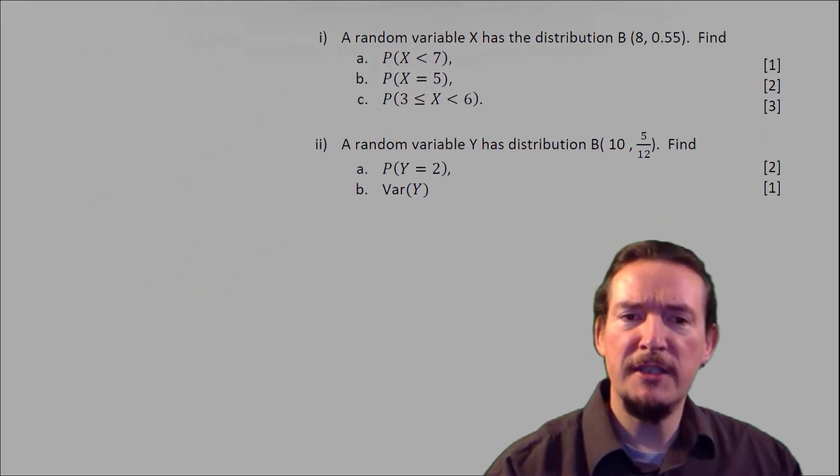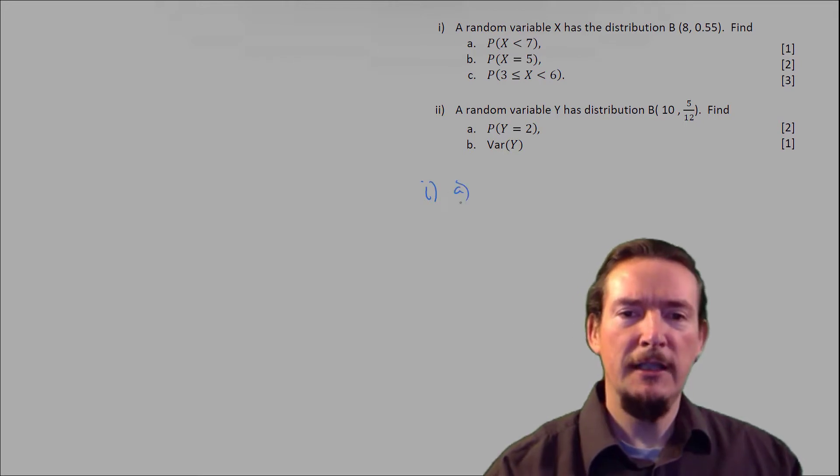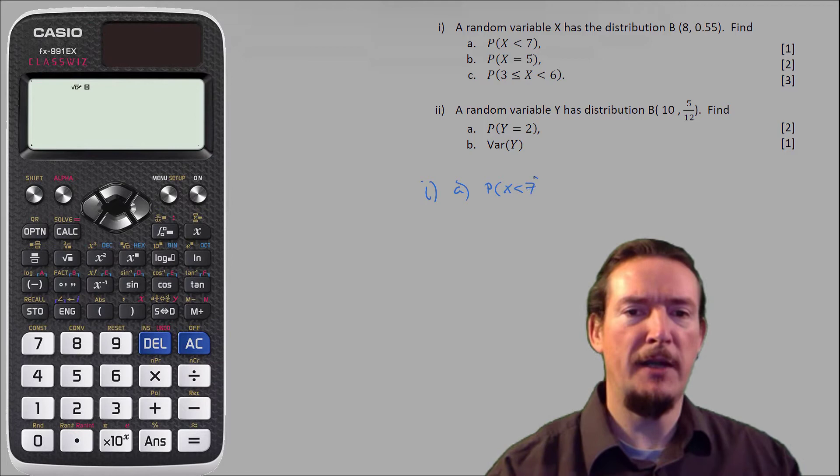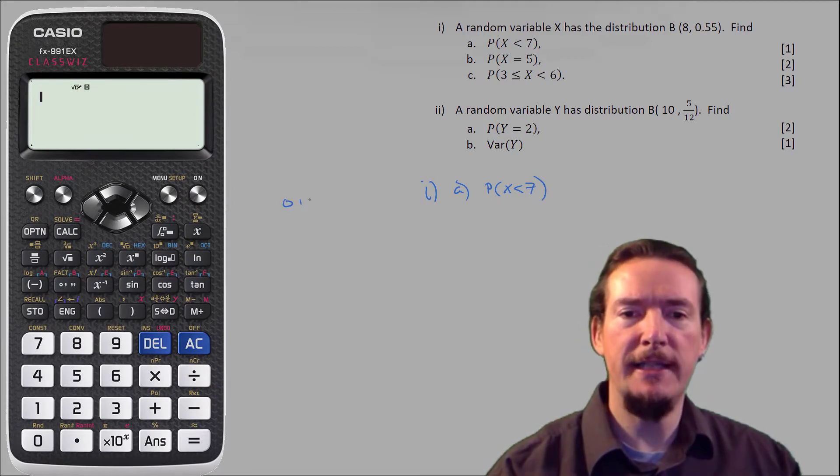When students make mistakes with these questions, it's nearly always with picking the appropriate range. If you also struggle with this, I think it's helpful to visualise the range by listing all the possible values and putting a ring around the ones we actually need.